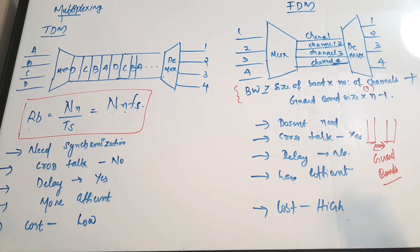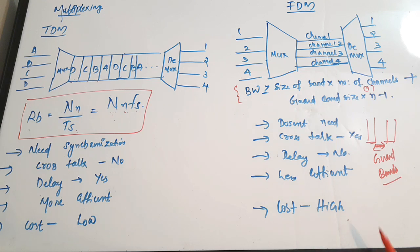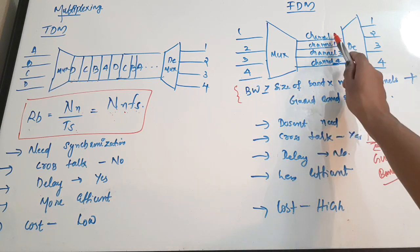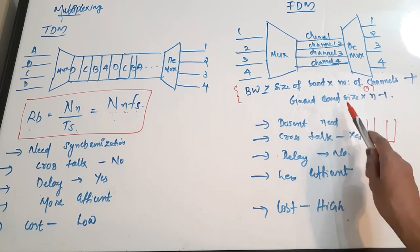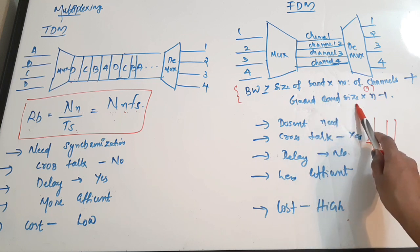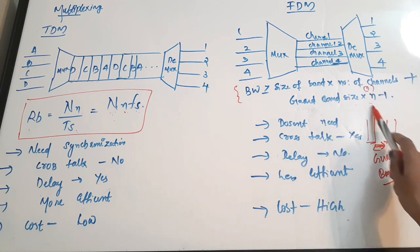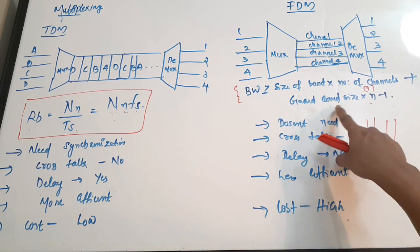For FDM, the maximum bandwidth must be greater than or equal to: (size of one channel × number of channels) + (guard band size × (number of channels − 1)). The number of guard bands equals the number of channels minus one.